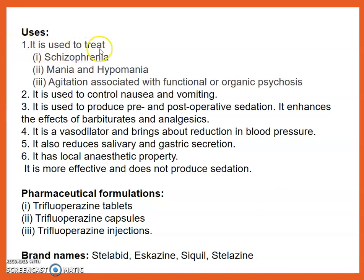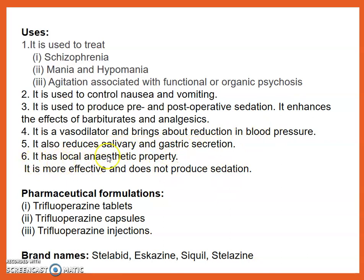Uses: it is used to treat schizophrenia, mania, hypomania, and agitation associated with functional or organic psychosis. It is also used to control nausea and vomiting. It is used to produce pre- and post-operative sedation, and enhances the effect of barbiturates and analgesics. It reduces salivary and gastric secretion, and has local anesthetic properties. It is more effective and does not produce excessive sedation.